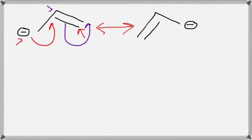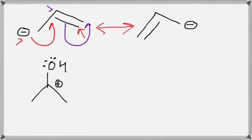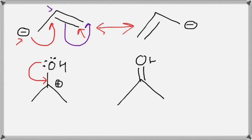Let's take another example. Here we have an OH group attached to a positively charged carbon. The oxygen atom has lone pairs, making it rich in electrons, and it is adjacent to the positive charge. Electrons flow from the lone pair to form a new bond, giving a double bond between carbon and oxygen. The oxygen, having donated its lone pair, gains a positive charge. These are the resonance structures for this molecule.